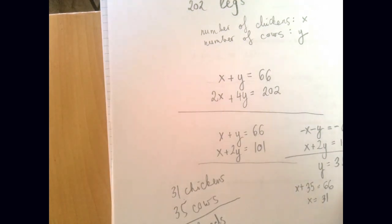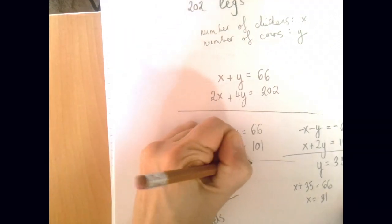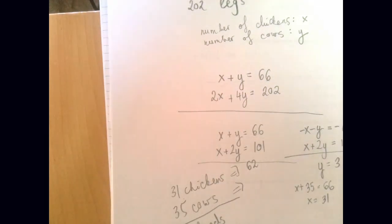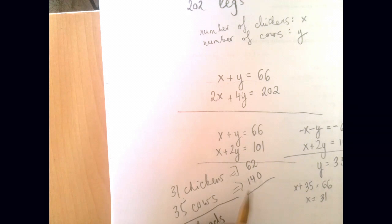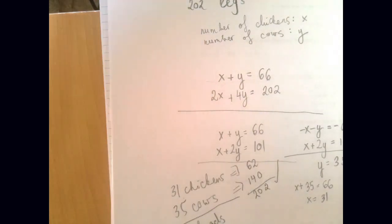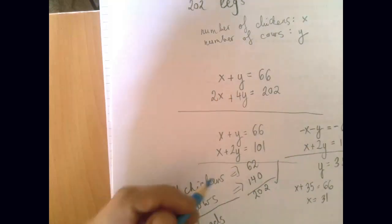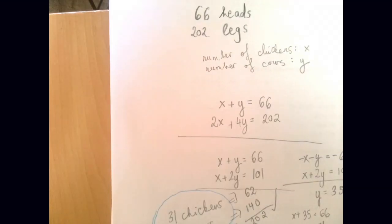Now, if we want to count the legs, well, 31 chickens would have 62 legs and 35 cows would have 140. And so when we add those two, we get 202. So both the legs and the heads check out. So our solution is correct. There are 31 chickens and 35 cows. So the problem is over.